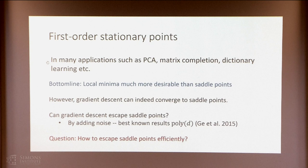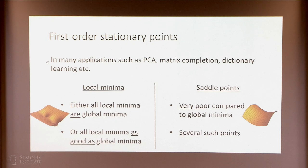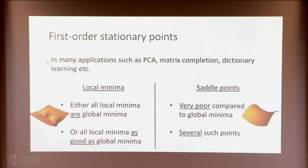Question: why do you say saddle points are worse than local minima? I can construct some local minimum worse than a saddle point. That's definitely possible. All I'm saying is that in several applications, particularly from matrix factorization, this is the case — I'm not saying it's always the case. Any theoretical guarantee? In these problems, it has been theoretically proven that local minima satisfy these good properties, whereas there can be saddle points which are bad.